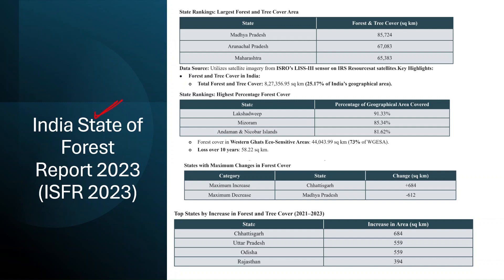The India State of Forest Report 2023 is released every two years, and whenever it is released, a question appears in CGAC. The largest forest and tree cover area is in Madhya Pradesh, followed by Arunachal Pradesh and Maharashtra. The data was derived from ISRO's Resourcesat satellite's LISS-3 sensor. The total forest and tree cover of India is around 25.17% of its geographical area.